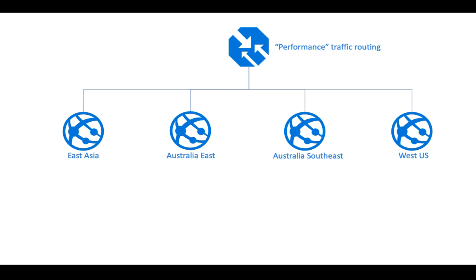But this might not be what you want, because Australia Southeast is a new region and you don't want to send all your Australian traffic there. You want roughly 20% of your Australian clients directed to Australia Southeast and the remaining 80% directed to Australia East. In this scenario you can't use the performance traffic routing method for all of them. You want performance routing between East Asia, Australia, and West US — but inside Australia you want weighted routing, assigning Australia East a weight of 80 and Australia Southeast a weight of 20.